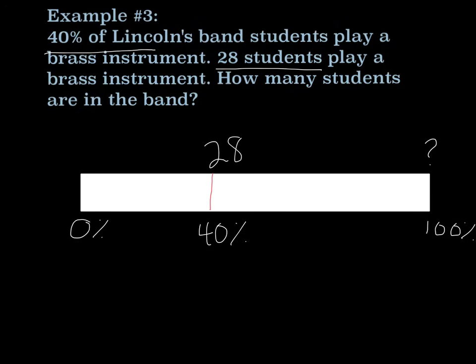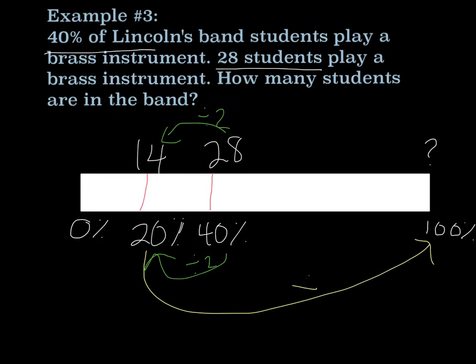So I would need to simplify this down to a percent that would help me get to 100. So what if I wanted to find 20%? And I knew 40%. To get from 40% to 20%, I divide by 2. So I would have to do the same thing on the top. 20 divided by 2 would give me 14. Now that I know this, now I can use that to get to 100%. 20% to 100% is times 5. So 14 times 5 would give me the band amount. And we know that 14 times 5 is 70. So there are 70 students in Lincoln's band.